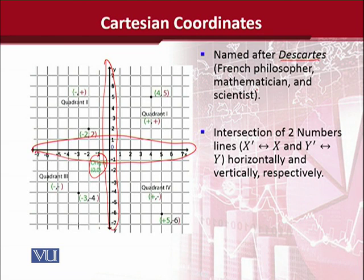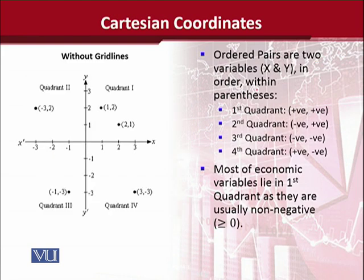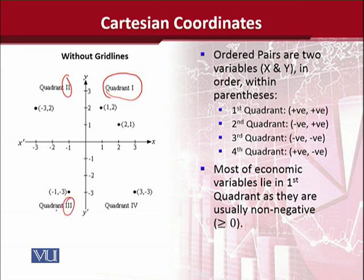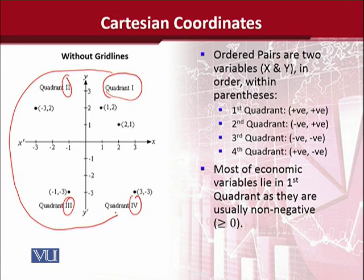Looking at this diagram more clearly, there are no grid lines in this Cartesian coordinate system. We can see that there are four areas due to the intersection of these two lines. The first is quadrant 1, the second is quadrant 2, the third is quadrant 3, and the fourth is quadrant 4. The way to remember these is to trace the letter C — going counter-clockwise: quadrant 1, then 2, then 3, then 4. These are known as quadrants because they represent a fourth part of a circle.